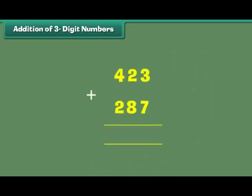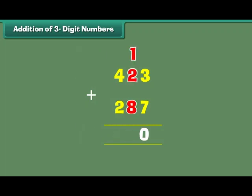Let us now learn to add two 3-digit numbers with carrying. What is 423 plus 287? The digits at the 1s place are 3 and 7. 3 plus 7 is equal to 10. Write 0 at the 1s place and carry over 1 to the 10s place. The digits at the 10s place are 1, 2 and 8.